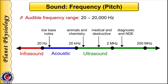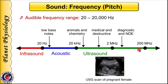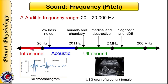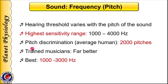Sound frequencies more than 20,000 hertz are called ultrasounds and are inaudible to the human ear, but they are used for a variety of purposes. A very common use in the medical field is ultrasonography. Sounds with a frequency less than 20 hertz are referred to as infrasounds, used for various purposes including ballistocardiography and seismocardiography. Human ears are highly sensitive in the frequency range of 1,000 to 4,000 hertz. The average human ear can discriminate about 2,000 pitches, while a trained musician has far greater sound discrimination ability. Pitch discrimination is best in the range of 1,000 to 3,000 hertz.